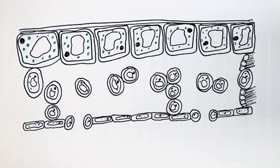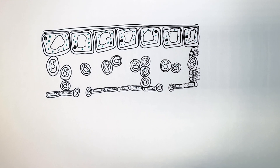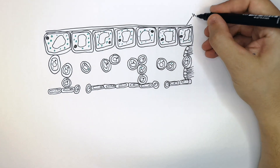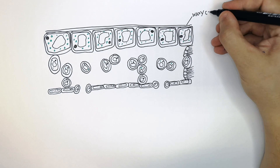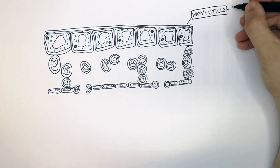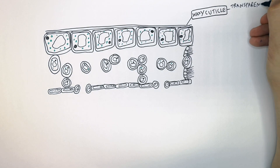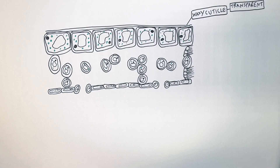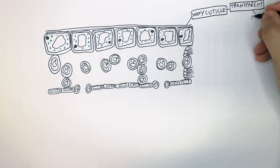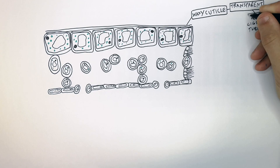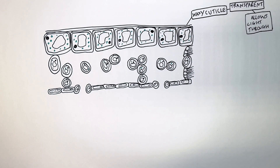We're now going to go through the adaptations of the leaf. The top layer of the leaf is known as the waxy cuticle. The waxy cuticle is transparent, and this is so it allows light through to the palisade cells of the palisade mesophyll.